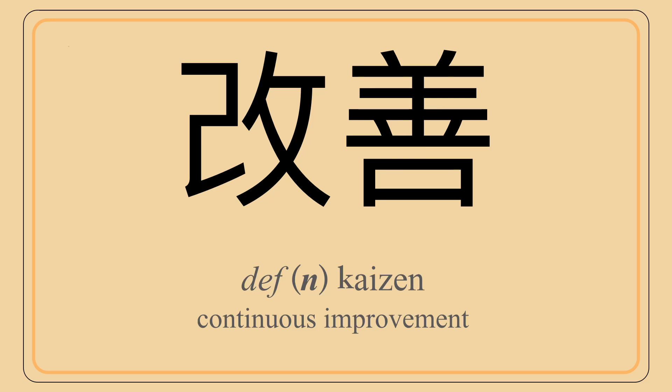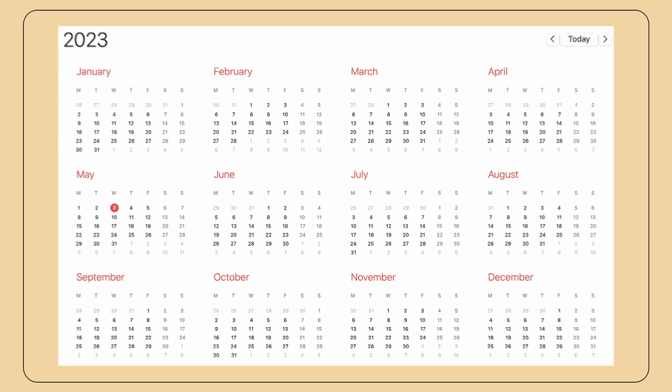Kaizen is a term originating from Japanese. It represents the philosophy of continuous improvement, that every day is an opportunity to improve.